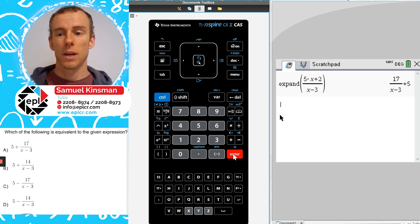Notice that the only answer choices that have 17 over x minus 3 are a and c, and a is the one where both the 5 and the 17 over x minus 3 are positive. So that's the right answer.